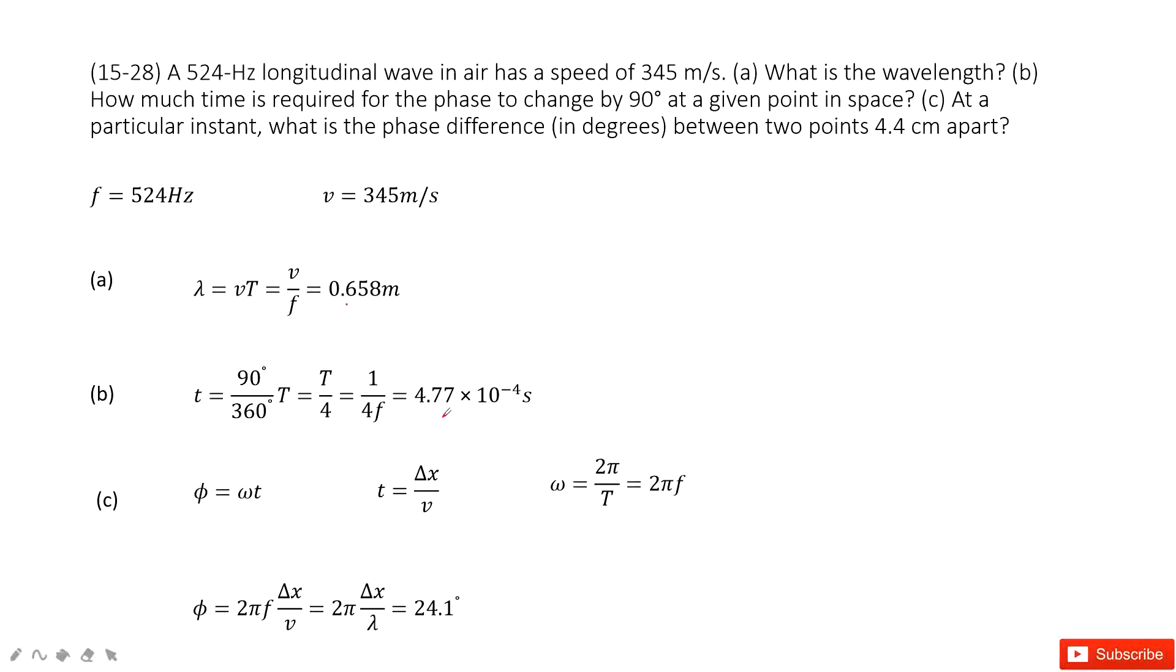The next one asks you to find the phase difference in degrees between two points 4.4 cm apart. So for phase shift, phase difference is how much angle it changes. That means use angular velocity ω times t, the time taken.